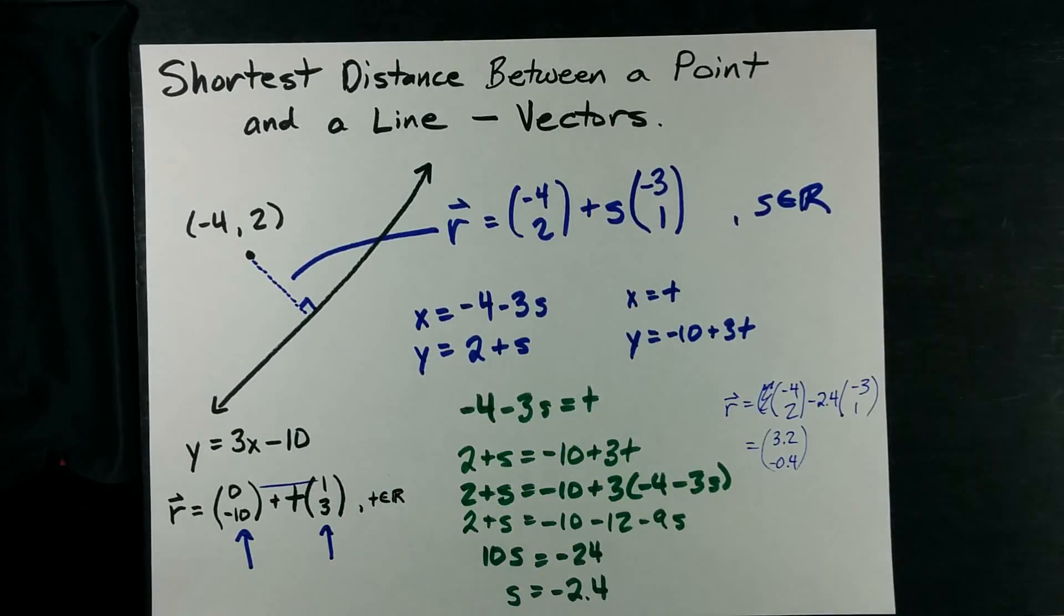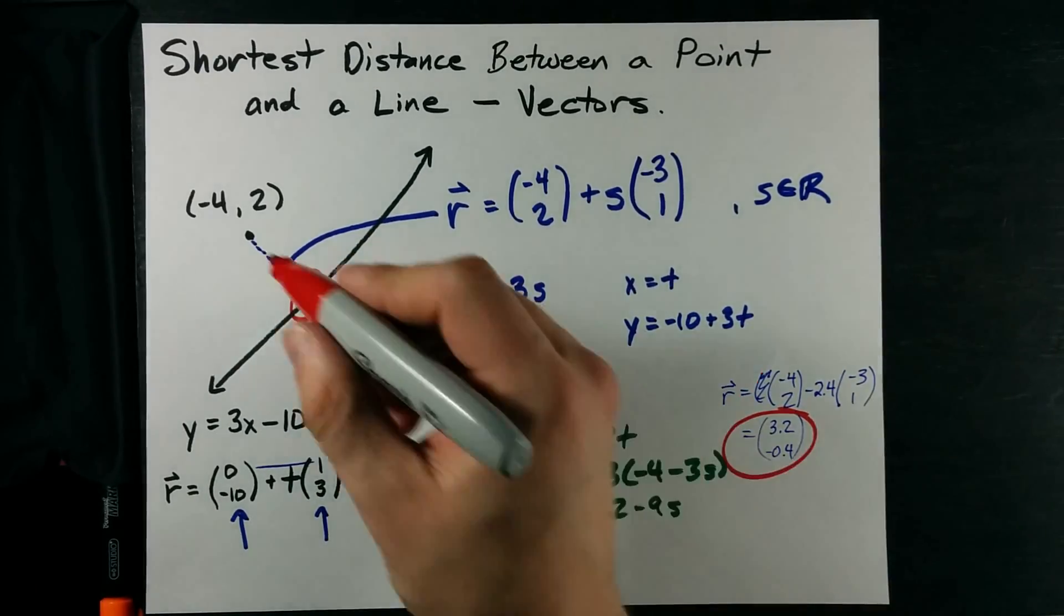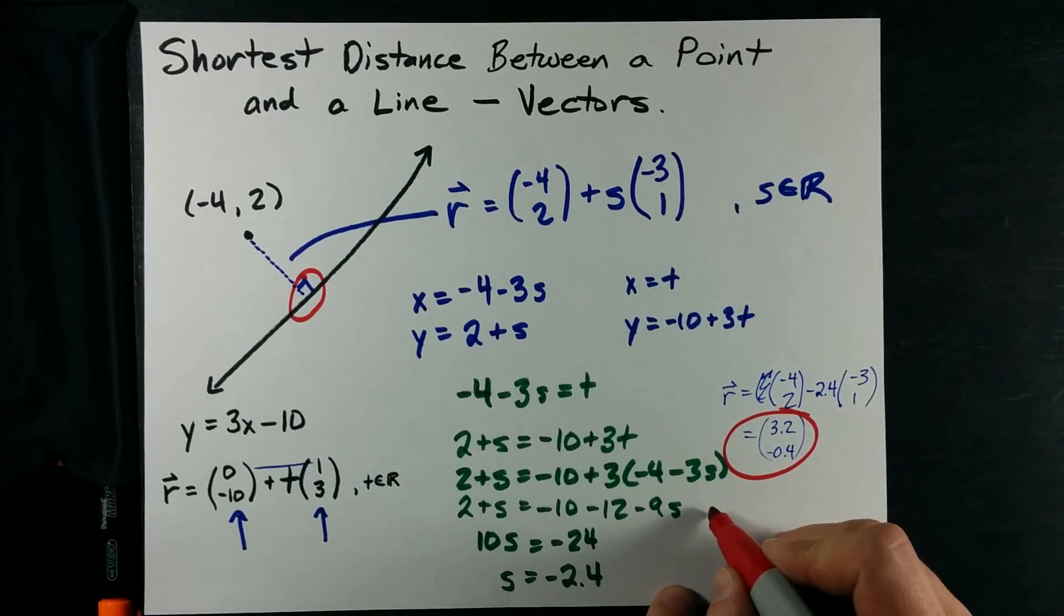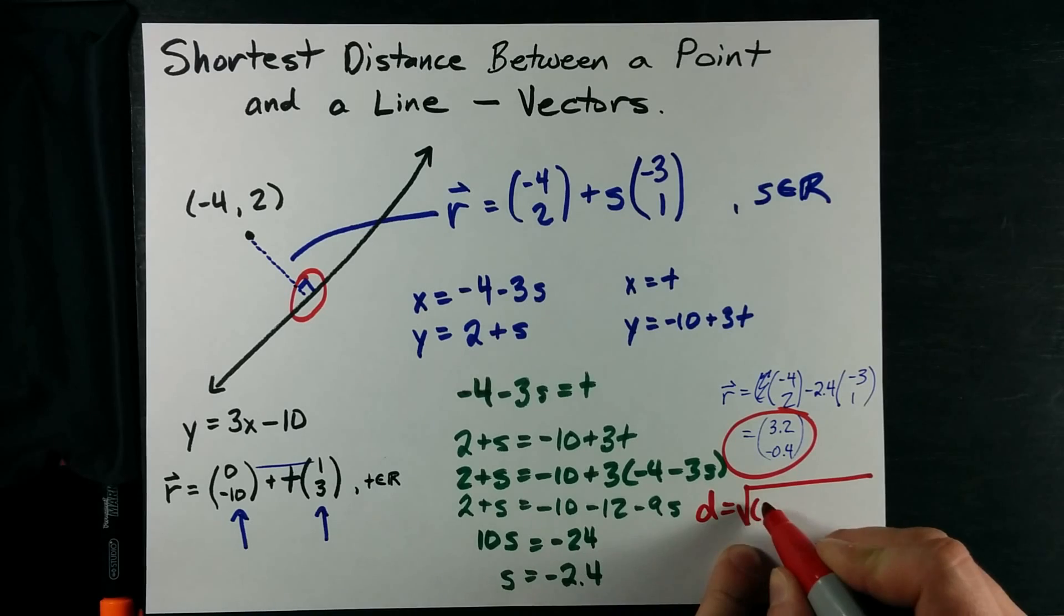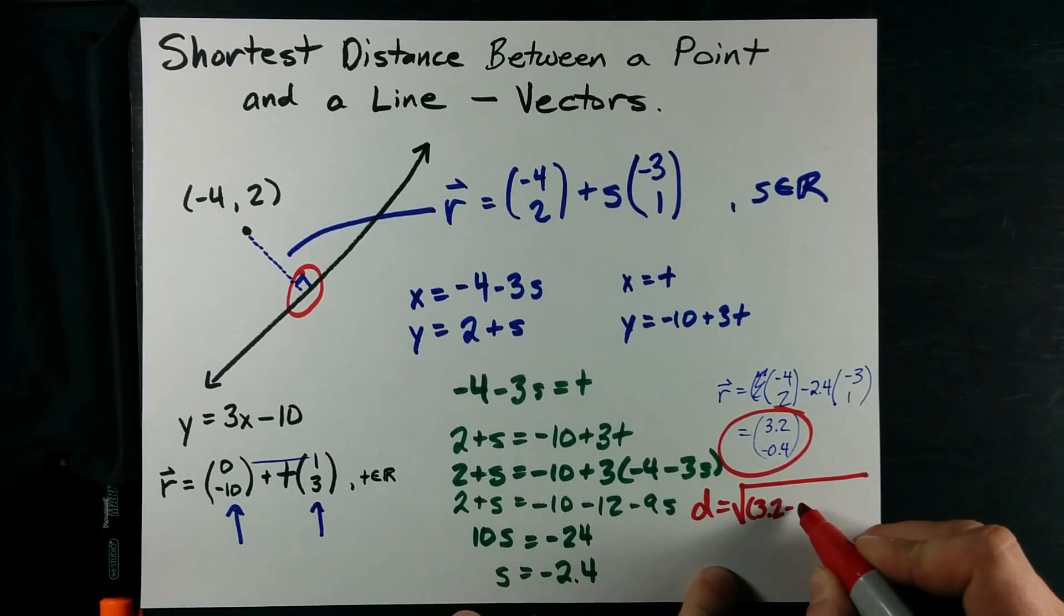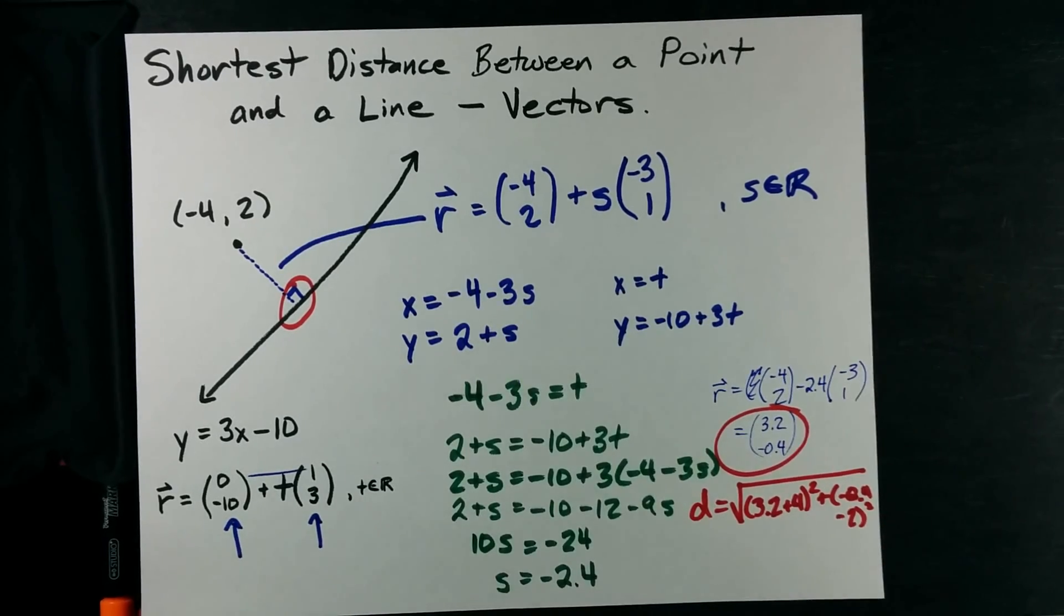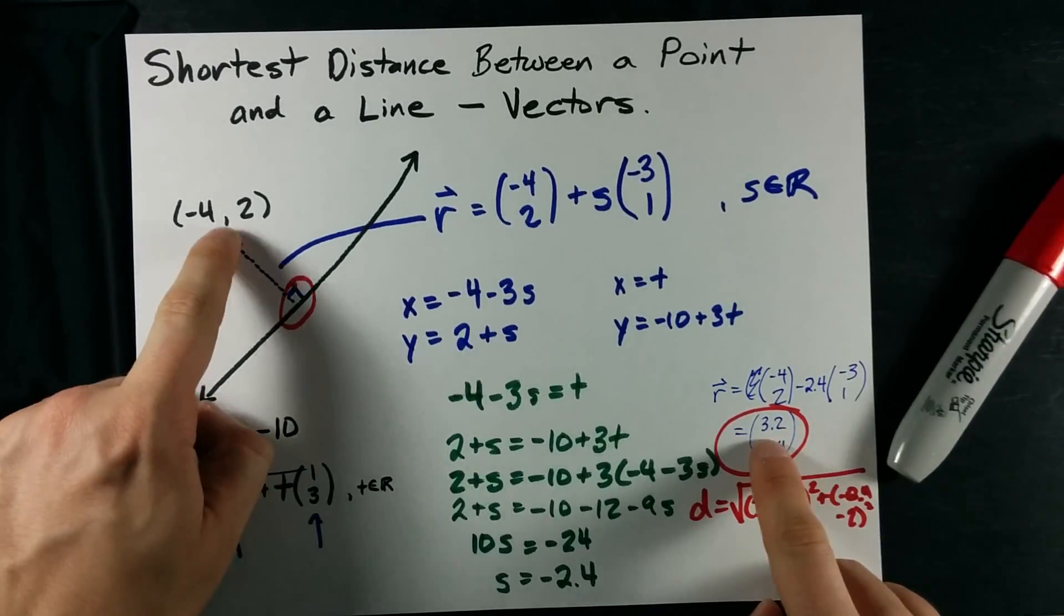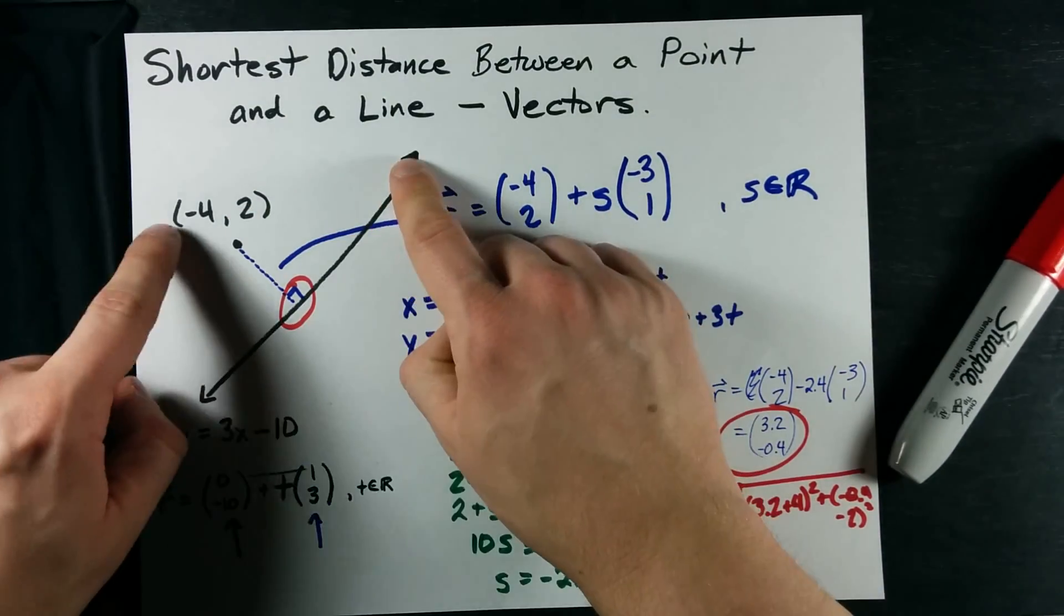I've got the coordinates of that point of intersection there. And to get the distance between the two, I just need to use the distance formula. That's x2 minus x1 squared plus y2 minus y1 all squared. You know how to use the distance formula. Just find the distance between those two points.